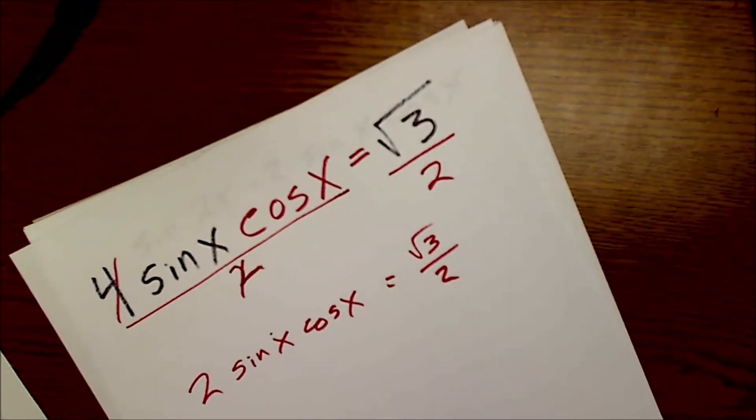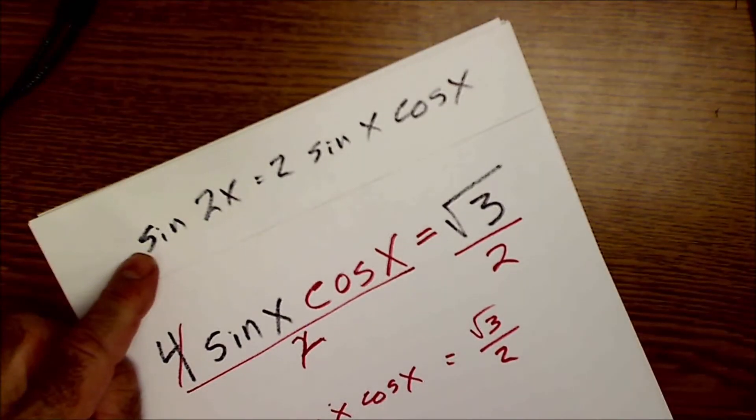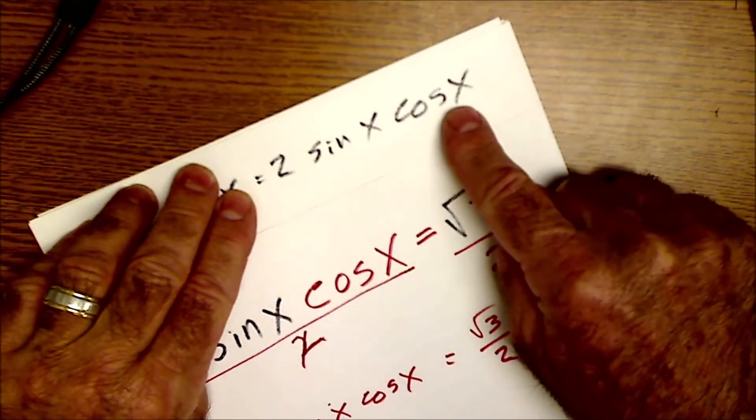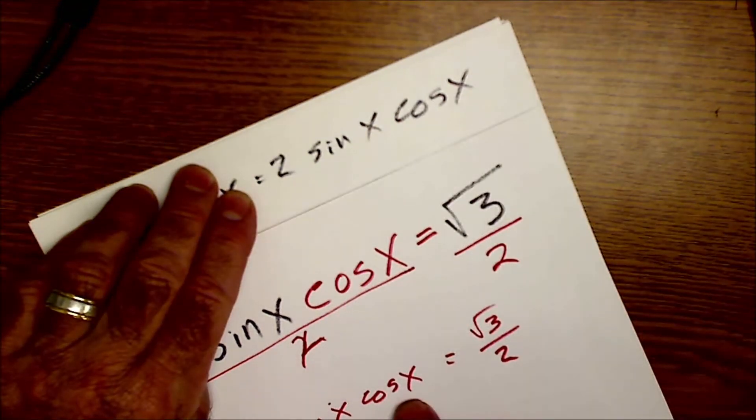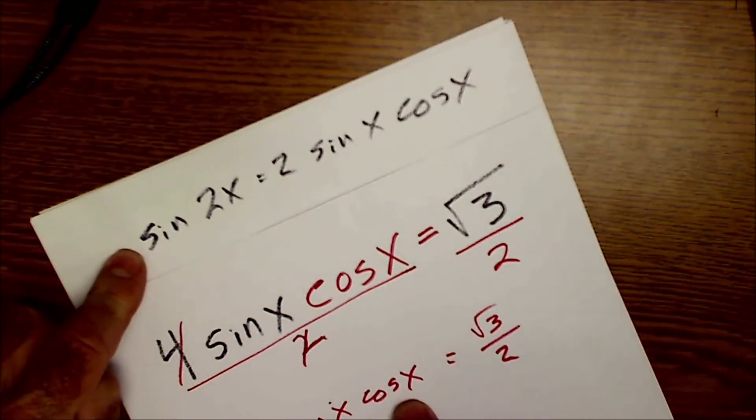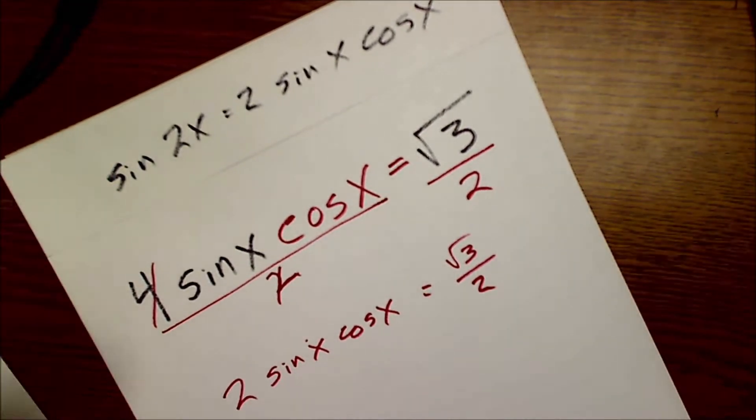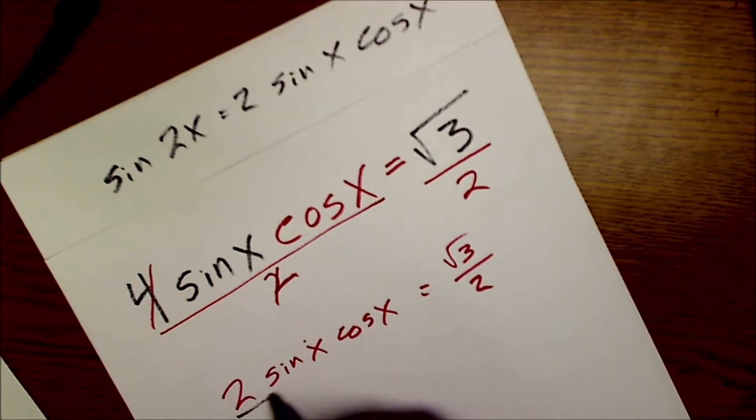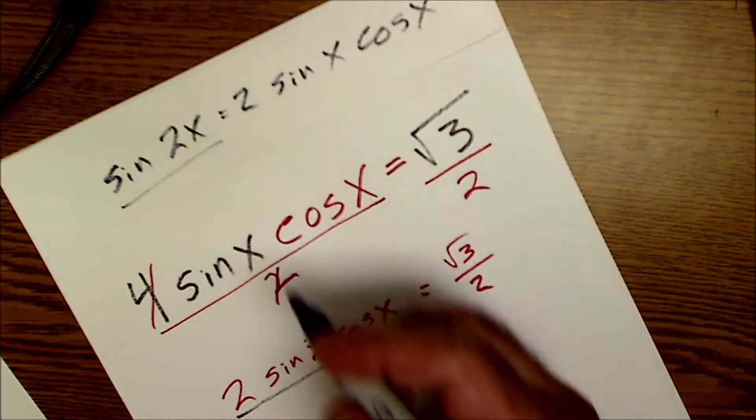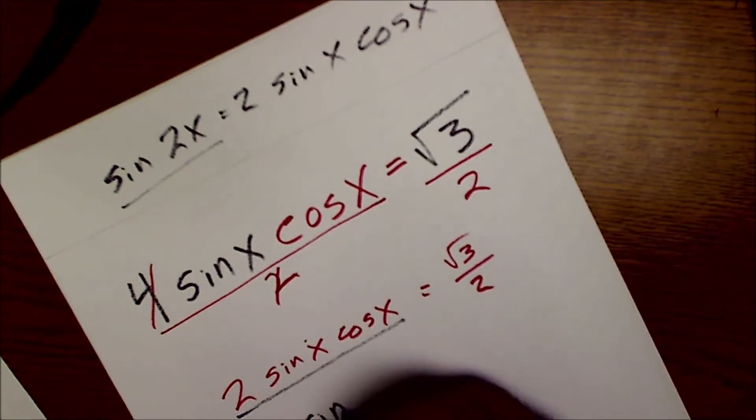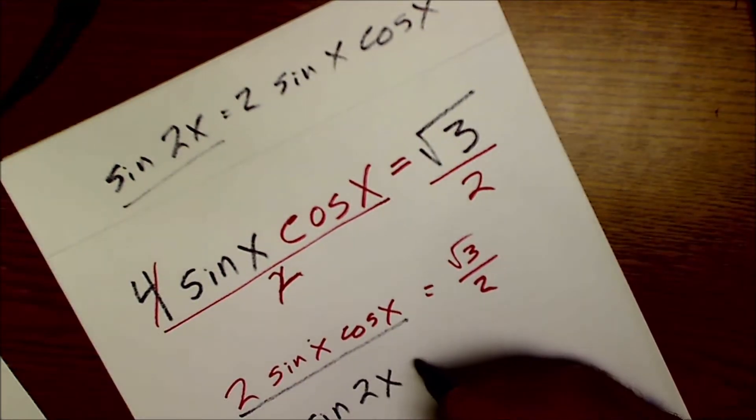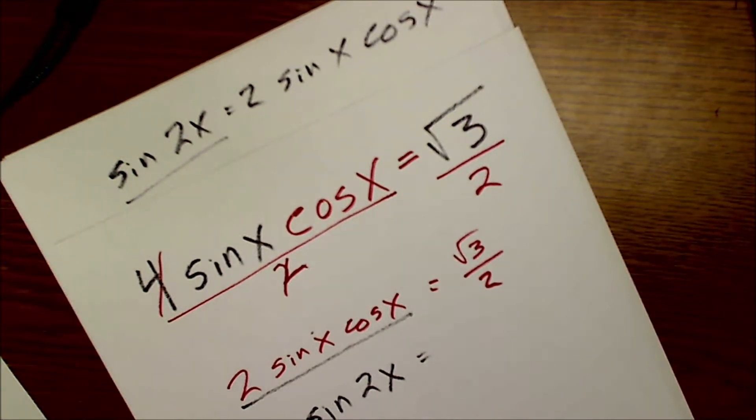And I can see now looking at that double angle identity, 2 sine of x cosine of x equals sine of 2x. So I can see that's going to work out. So I'm going to replace this with the identity sine of 2x. So sine of 2x equals root 3 over 2.